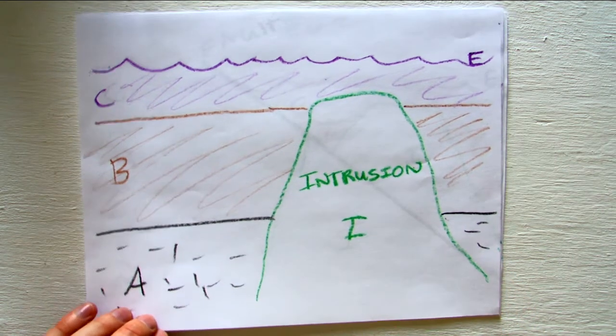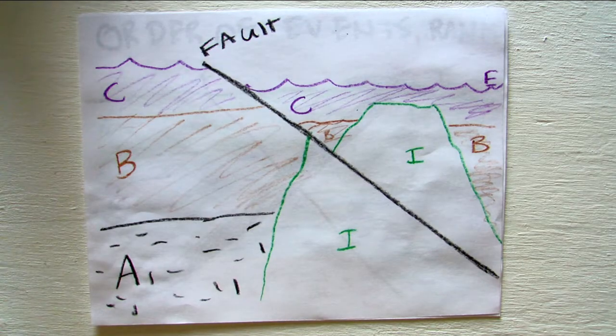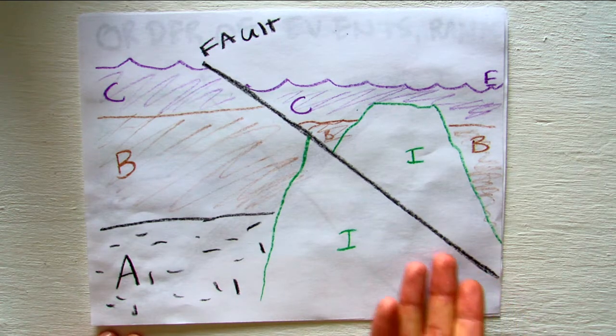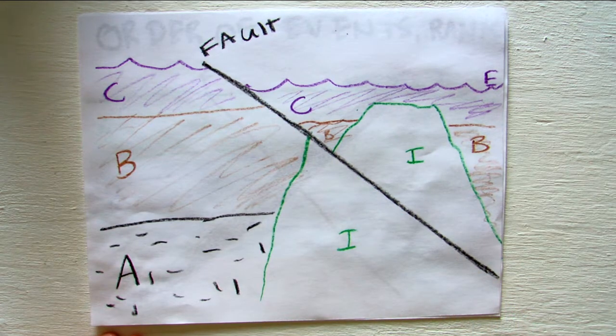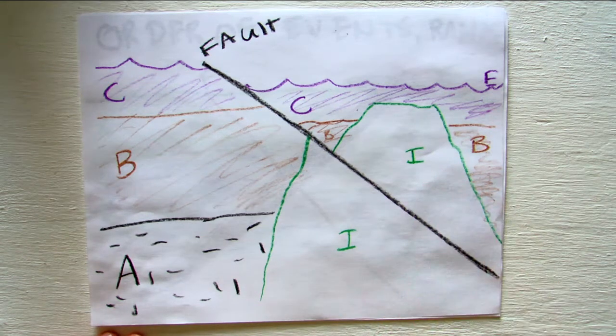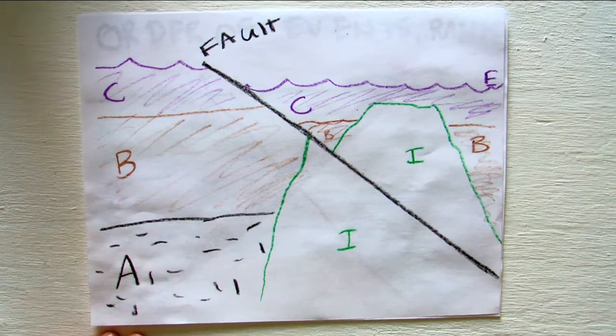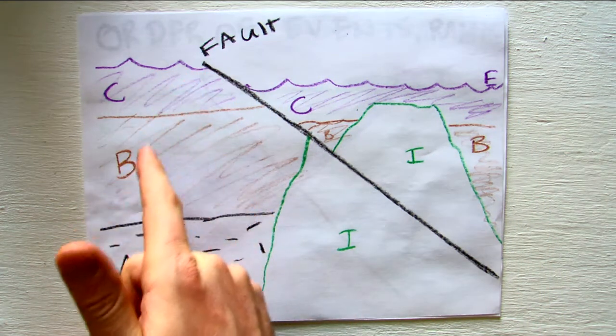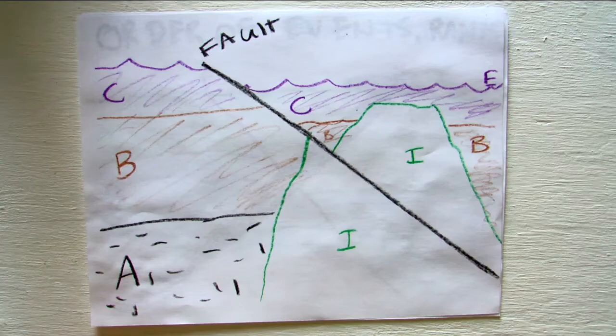Now what would happen if a fault came in and cut all of those? Notice that the fault is cutting the other layers. So the fault is the youngest thing. And then I is second youngest. Third youngest is the erosion layer. And then layers C, B, and A being the oldest.